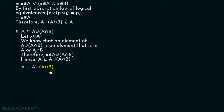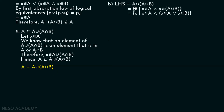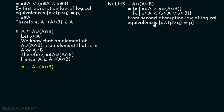Now let us prove the second absorption law using a direct method. The LHS is A intersection A union B. This can be written as the set of all X such that X belongs to A and X belongs to A union B. We can expand this as X belongs to A or X belongs to B. So the whole statement is X belongs to A and X belongs to A or X belongs to B. From the second absorption law of logical equivalences, P and P or Q is equal to P. Therefore, this equals the set of all X such that X belongs to A, which is simply set A. Therefore, A intersection A union B is equal to A.